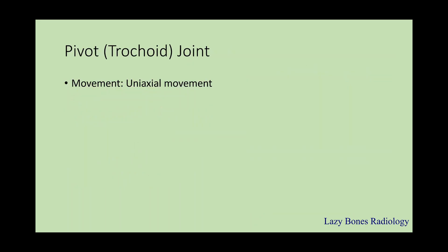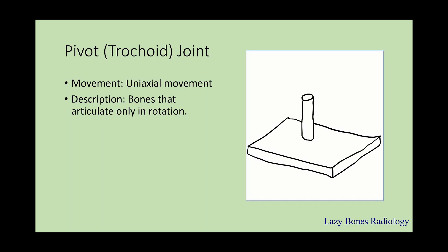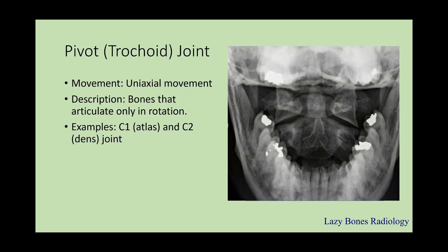Next is the pivot joint. This joint has uniaxial movement, described when bones articulate only in rotation. As you can see in the diagram, you're only able to twist side to side — a rotational movement. An example is the C1–C2 articulation at the top of the cervical spine, where this articulation allows the skull to rotate side to side.